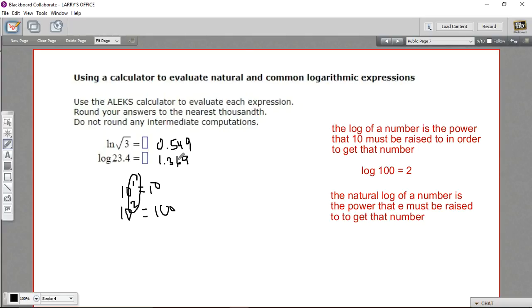1.369. So what this number means is if you take 10 and you raise it to the 1.369 power, you'll get 23.4. So that's a little introduction to using a calculator to figure out logs and natural logs.